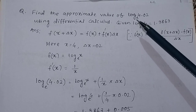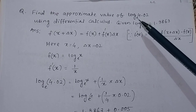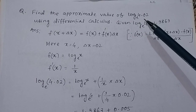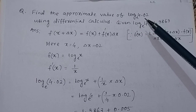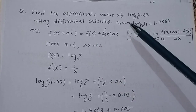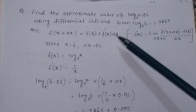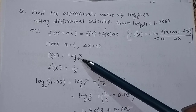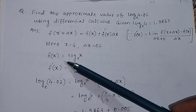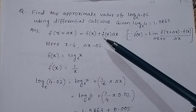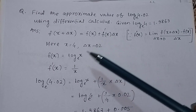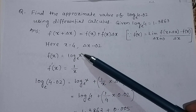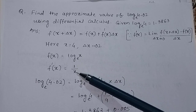Here, the value of x is equal to 4 and the value of Δx is equal to 0.02, and the function is log x to the base E. So f(x) = log_e(x), and f'(x) — the first derivative of log x to the base E — is equal to 1/x.